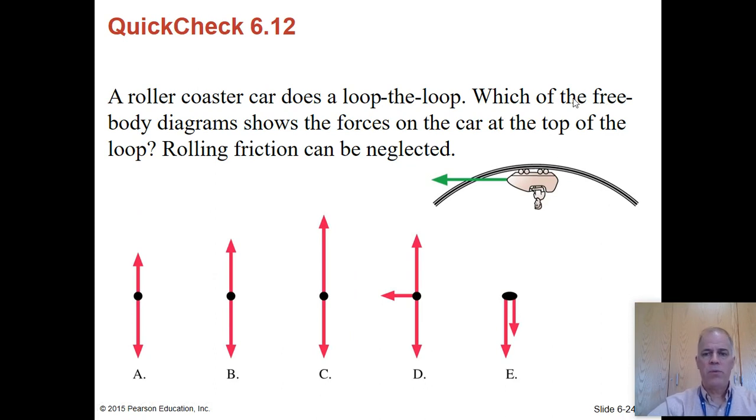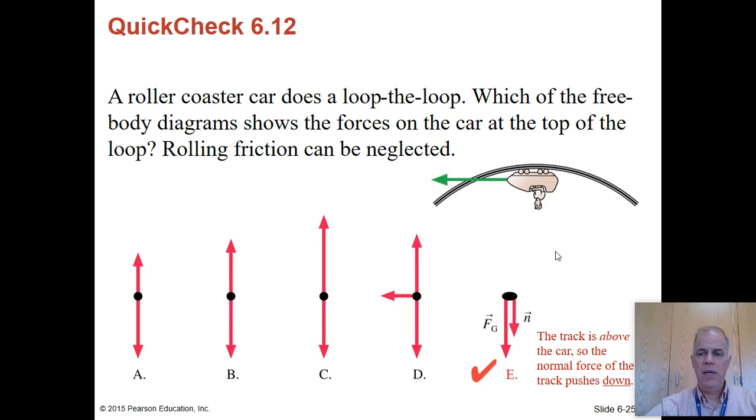Next one. Here we have a roller coaster train going upside down through a loop. So this is just asking a straight free body diagram question. The answer here is E. So there's two forces acting. There's gravity pulling on the train car, pulling it down. That's one of the arrows. And then the train track is also pushing down on the wheels. So that's the other one pushing down.